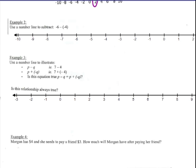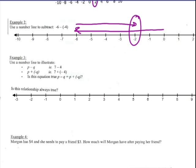Example 2: use a number line to subtract negative 6 minus negative 4. You start at 0 and go over to negative 6. Subtracting a positive, you would go to the left. Subtracting a negative, you go 4 to the right. That answer is negative 2, because negative 6 minus negative 4 is the same as adding negative 6 with positive 4 — keep, add the opposite. Different signs subtract, so you get 2 and take the sign of the larger absolute value: negative 2.